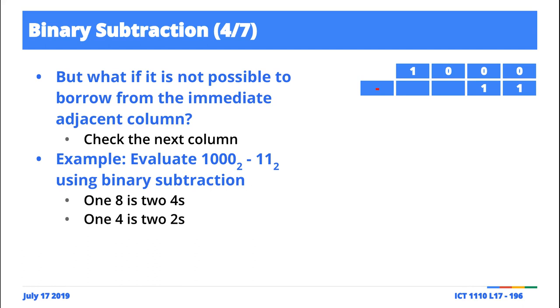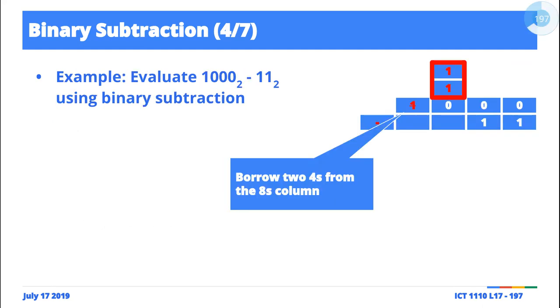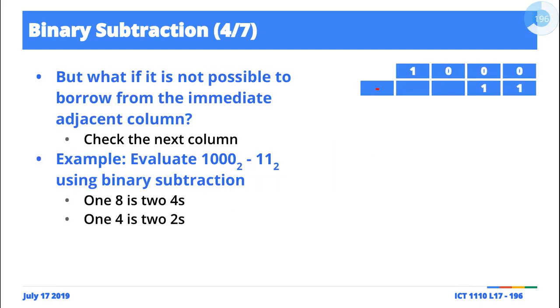Look at this example. We're trying to subtract - what are we subtracting? Three from what? This is the ones place, two's place, four's place, eight's place, right? Effectively we're saying eight minus three - we should have five.